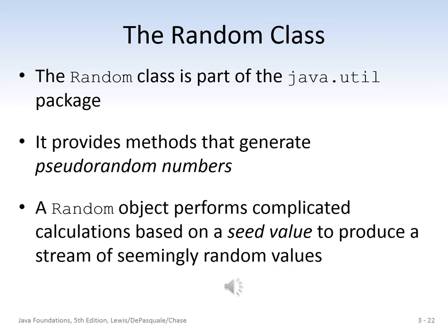The Random class is also part of the java.util package and provides methods used to generate pseudo-random numbers. At this point in your computer science education, you should understand that computers cannot generate a truly random number — they generate numbers that are extremely random-like, or pseudo-random. A Random object performs complicated calculations based on a seed value to produce a stream of seemingly random values, but computers are not capable of creating purely random values.